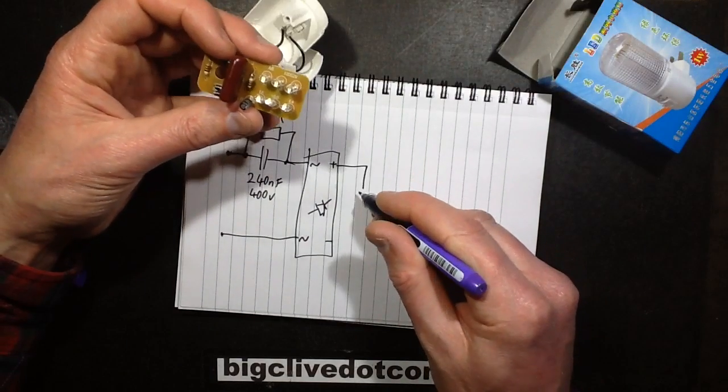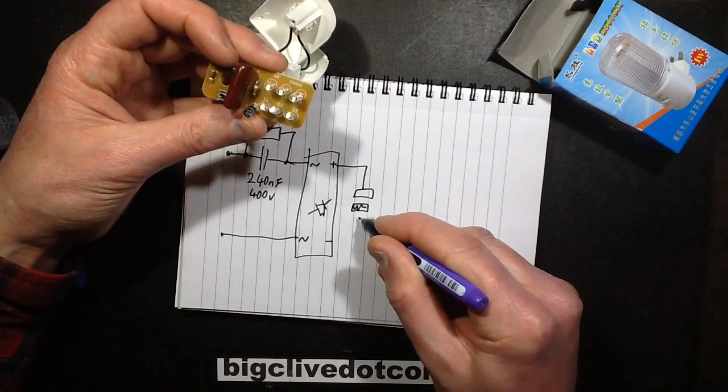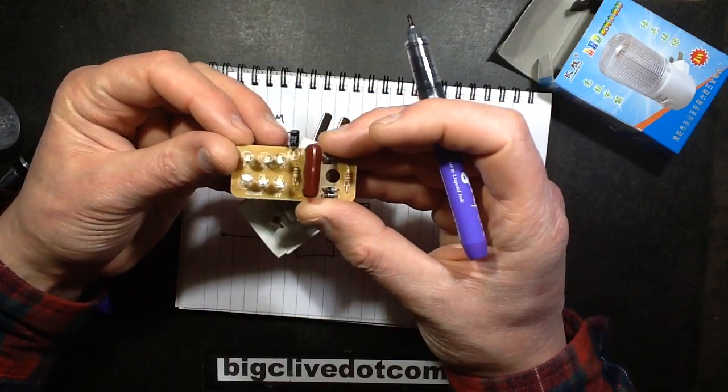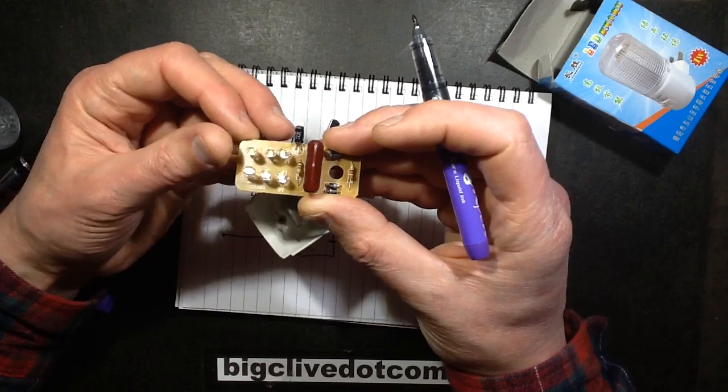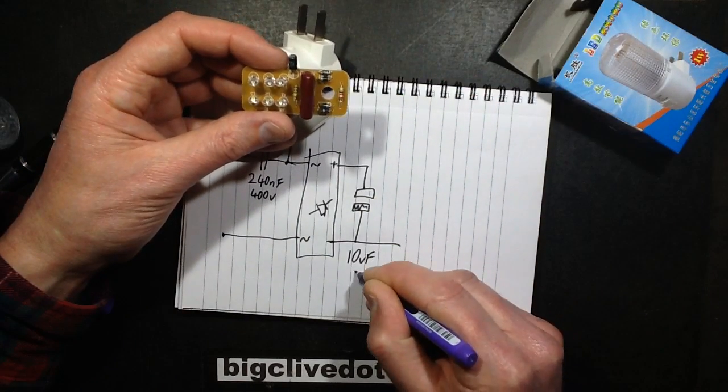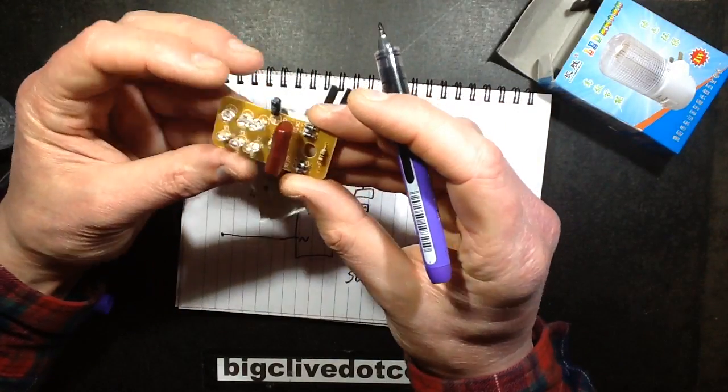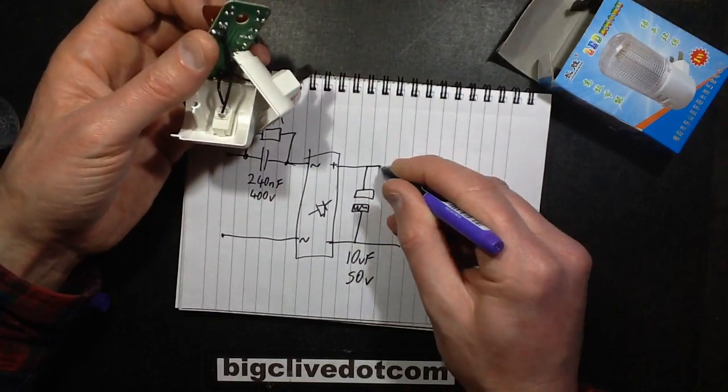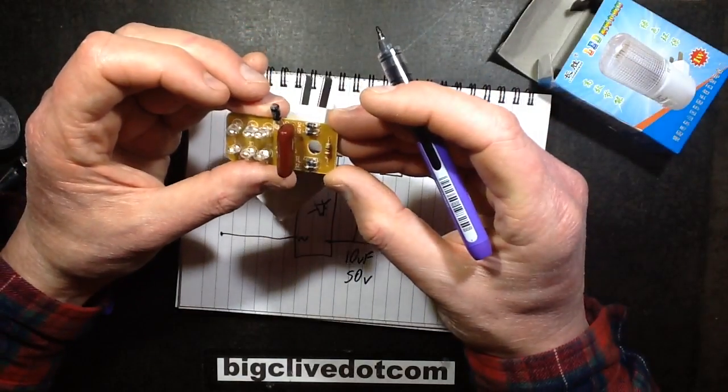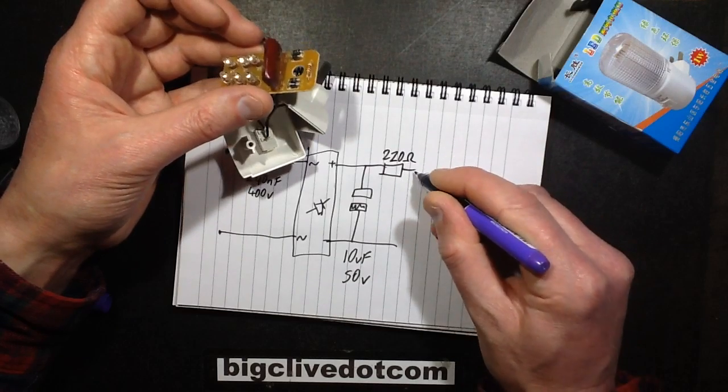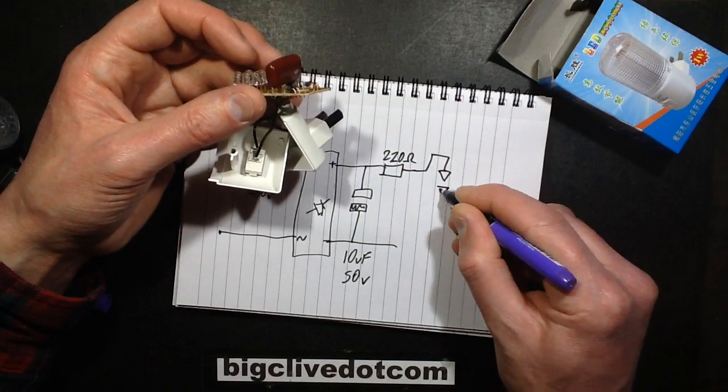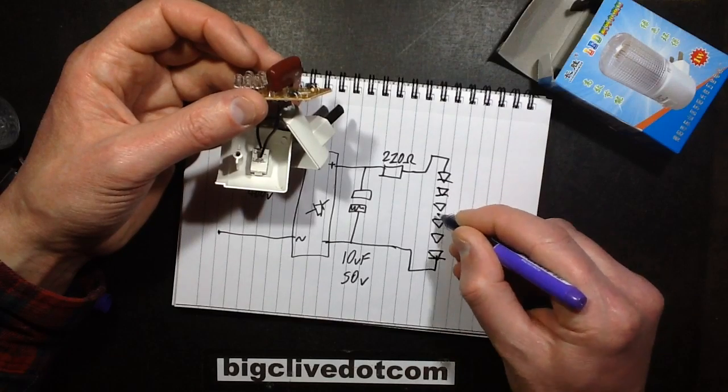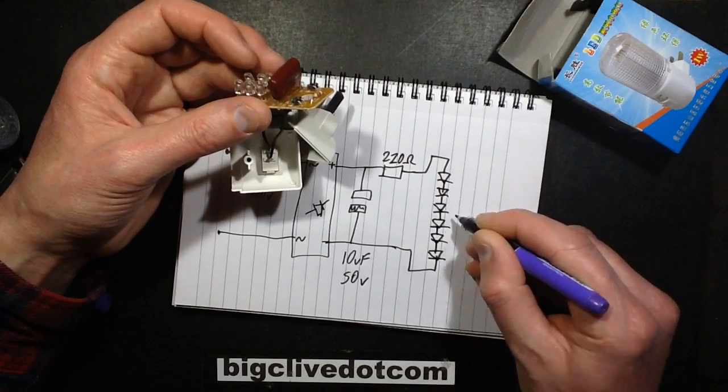And then there's a capacitor across the output. Let's see what value that is. It's quite a small capacitor, not going to be anything particularly spectacular. 10μF at 50V. The resistor is connected to the positive output. And what value is that? It's 220 ohms. And then it's just really 1, 2, 3, 4, 5, 6 LEDs.